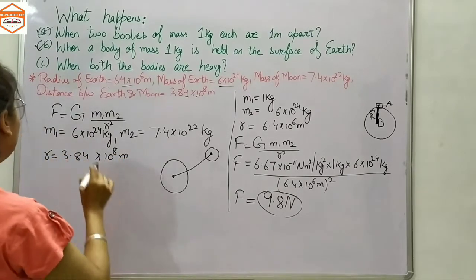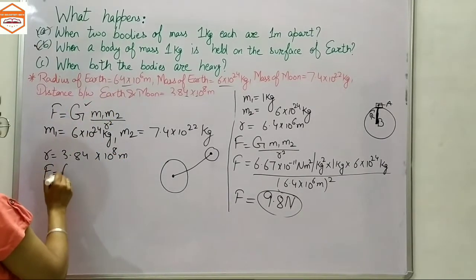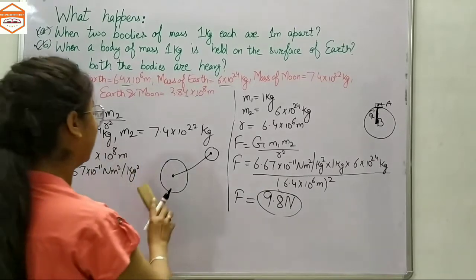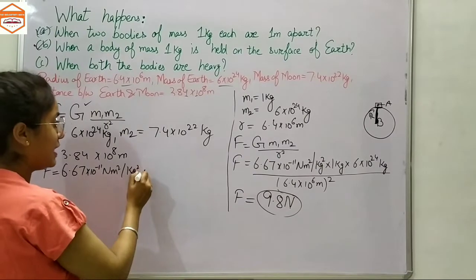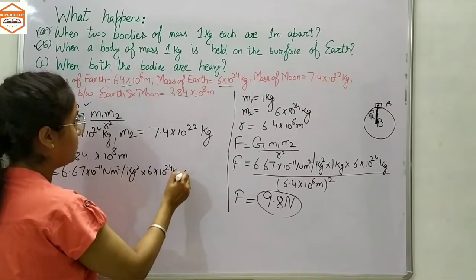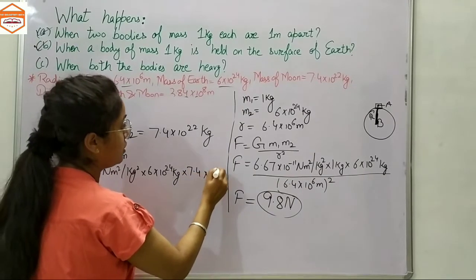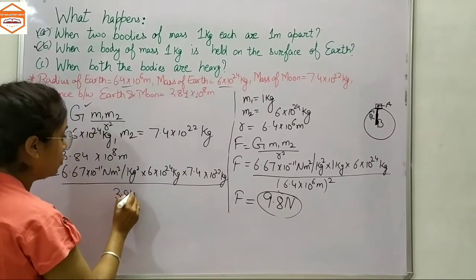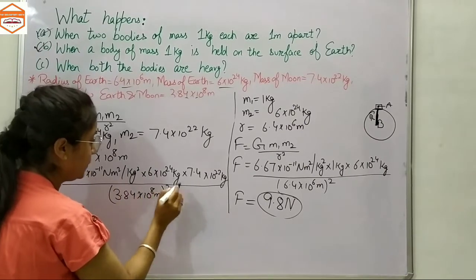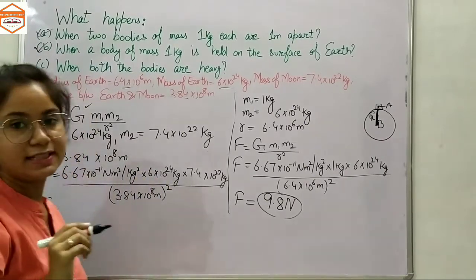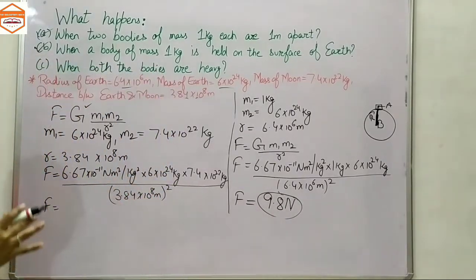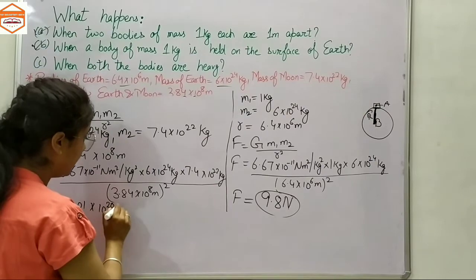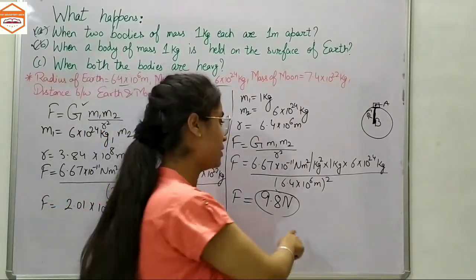We apply the formula: F = 6.67 × 10⁻¹¹ N·m²/kg² times M₁ = 6 × 10²⁴ kg times M₂ = 7.4 × 10²² kg, divided by the distance 3.84 × 10⁸ meters squared. Again a calculator is needed, but the answer is approximately 2.01 × 10²⁰ newtons.